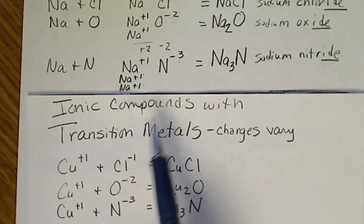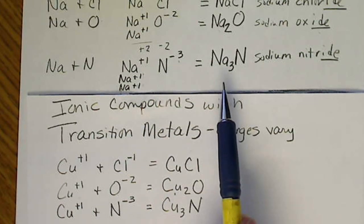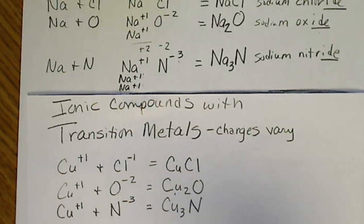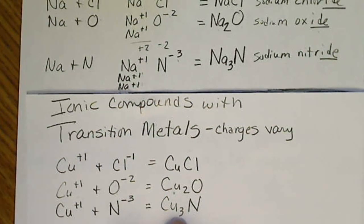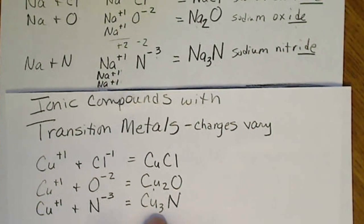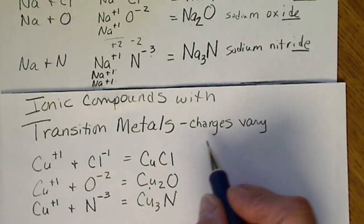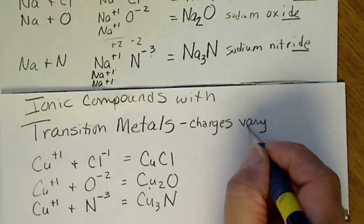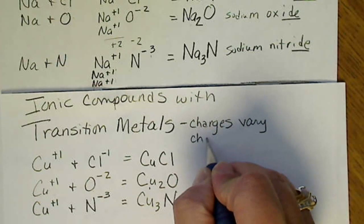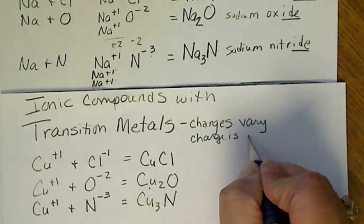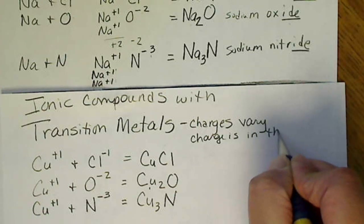And just to do overkill, sodium and nitrogen takes 3 sodiums for every nitrogen, and this one takes 3 coppers for every nitrogen. So the only thing different in the naming is that the transition metals, because the charges vary, the charge is in the name of the metal.